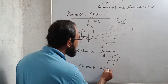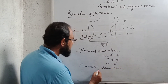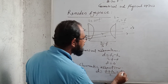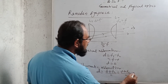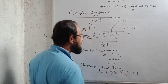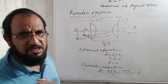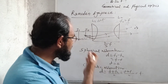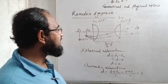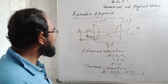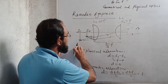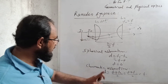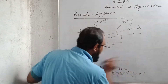Secondly, for chromatic aberration — the condition is that the distance between the two lenses should be (f1 + f2) / 2, which is (f + f) / 2 = f. So if the distance between two lenses is f, then the chromatic aberration is removed. But here the distance is 2/3 f, which means there is chromatic aberration. This eyepiece is not free from spherical aberration and not free from chromatic aberration.